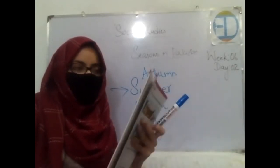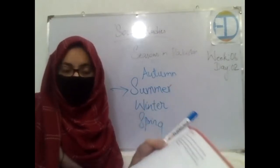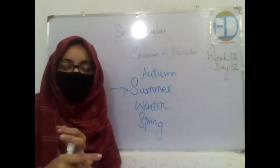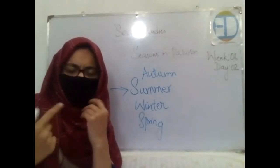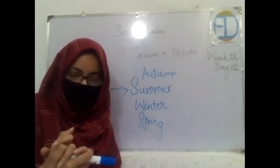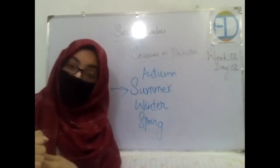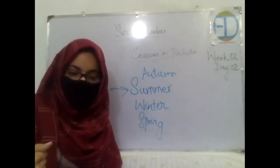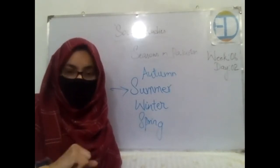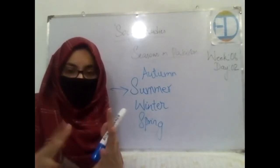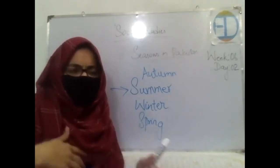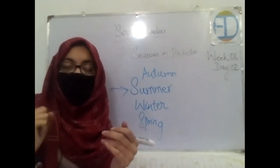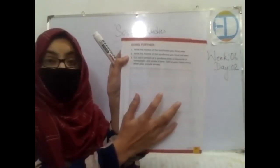The next question asks you to write the names of landforms you have seen — have you ever visited a desert, valley, mountain, or hill? Write their names. Then write the names of landforms you have not seen but want to see in the future. The third part is your home assignment: find a picture of a landform from any magazine, newspaper, or download it from Google, and paste it in your book.